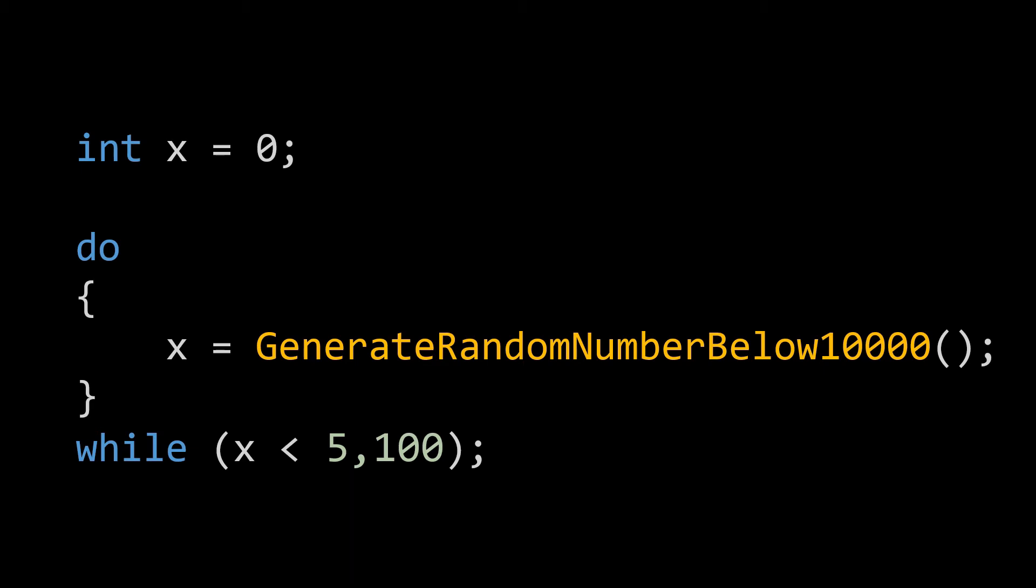Not so fast. A newcomer to C++ may forget that a comma is not a math semantic, but rather an operator. This mistake can be deadly, especially in this example. Remember that the comma operator has the lowest precedence, and so the expression in the while loop is evaluated as such. The left-hand side evaluates to a boolean result, that being is x less than 5.